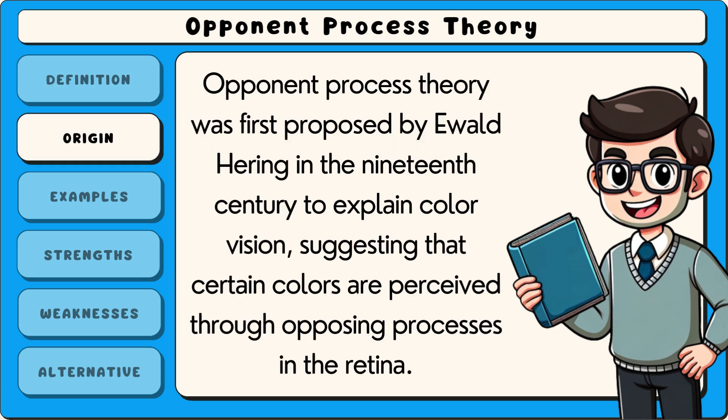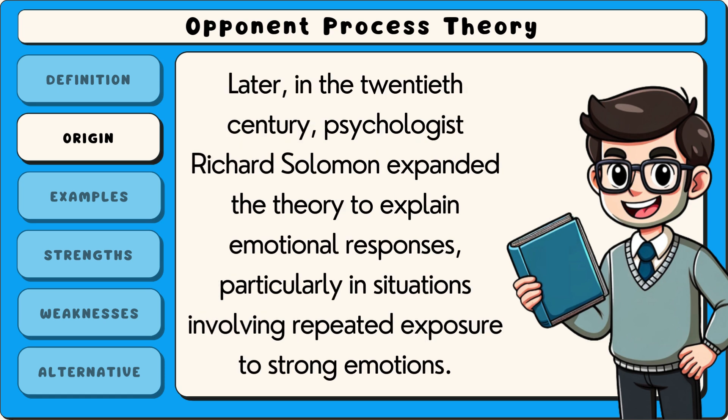Opponent process theory was first proposed by Ewald Hering in the 19th century to explain colour vision, suggesting that certain colours are perceived through opposing processes in the retina. Later, in the 20th century, psychologist Richard Solomon expanded the theory to explain emotional responses, particularly in situations involving repeated exposure to strong emotions.